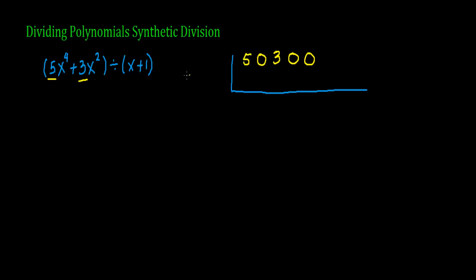The divisor outside this upside-down division box we get from this binomial. We take x plus 1, we equal it to zero, and then we solve for x. x is equal to negative 1, and this negative 1 is the number that goes outside that box.